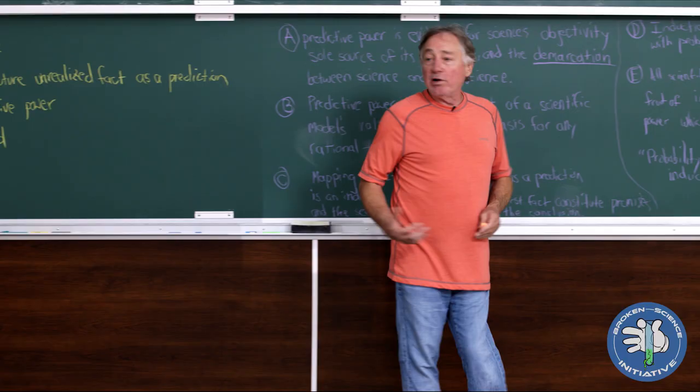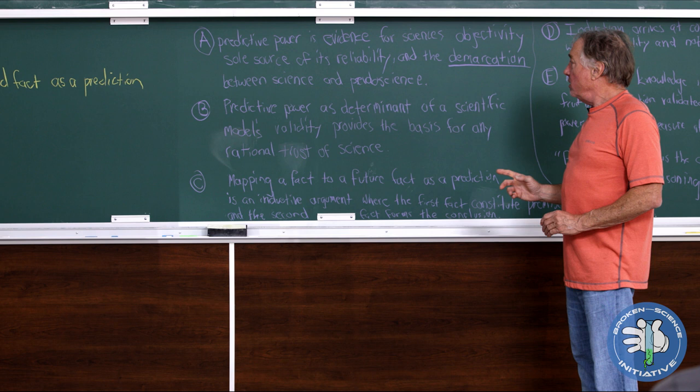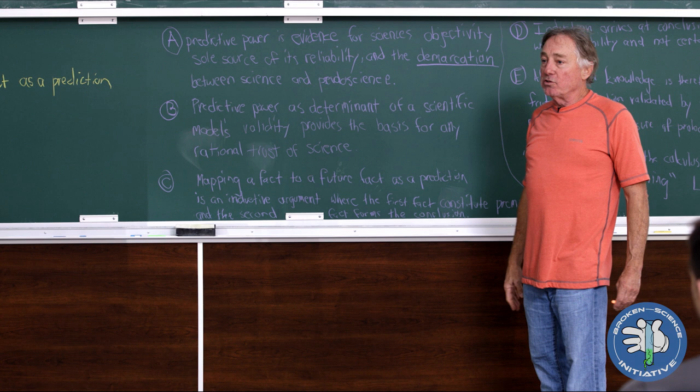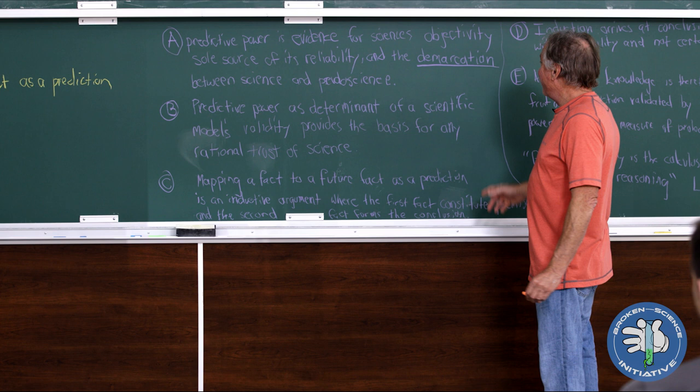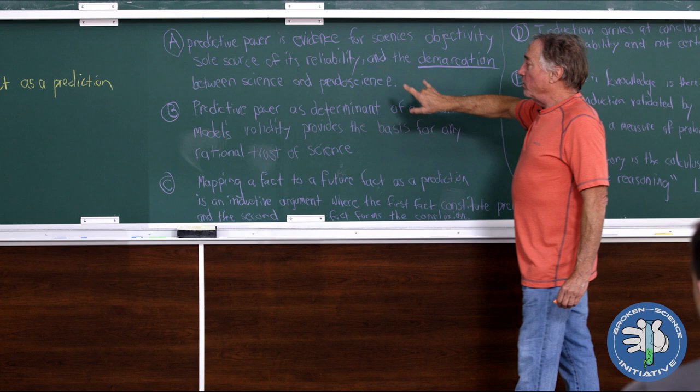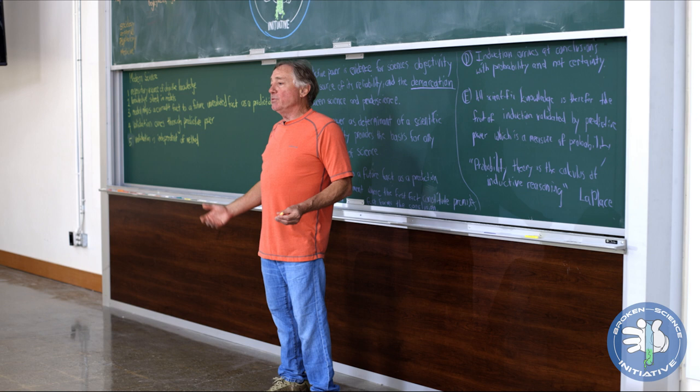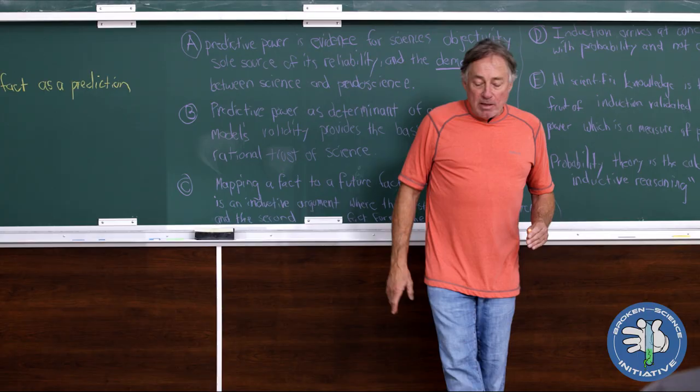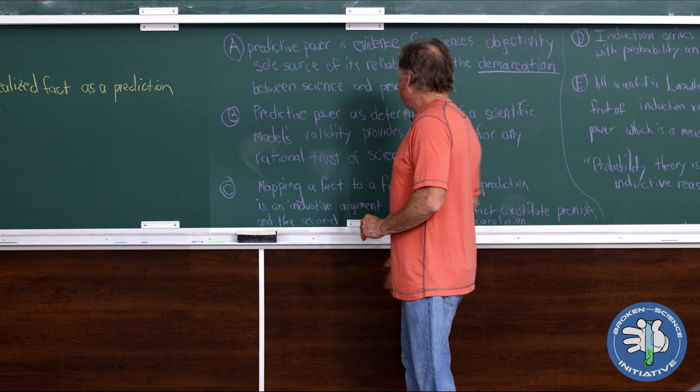I've got five concepts related to that I want to share. A, predictive power is evidence for science's objectivity, sole source of its reliability, and the demarcation between science and pseudoscience. I could have just as easily said science and non-science, but I picked pseudoscience because that's what Karl Popper did. The thing that separates astronomy from astrology is that astronomy has predictive power. If someone says there's going to be an eclipse in 215 days and four hours, and it happens, that's the kind of thing you see in astronomy. Astrology has a little harder time with 'Aries are happier and make better lovers.' That's a different kind of thing where you may not be able to show any predictive power.